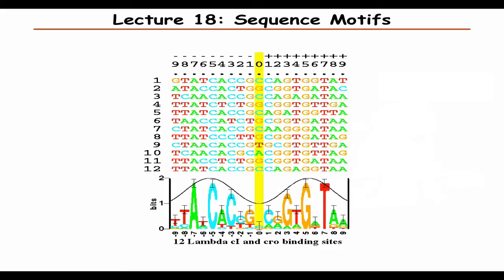Back to sequence analysis — now looking at sequence motifs. We've taken a reasonably well-conserved region and want to look at exactly which bases are conserved and which are not. One very illustrative way this is often done is showing a sequence logo. When the letters are large, the position is dominated by one base, but in other positions there is quite a bit of ambiguity with multiple possibilities.